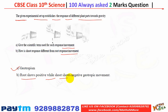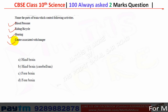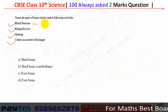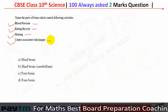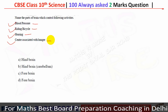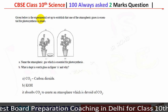Name the parts of the brain which control the following activities: blood pressure, riding a bicycle, hearing, and the center associated with hunger. Blood pressure is controlled by the hindbrain. Riding a bicycle is also controlled by the hindbrain. Hearing and the center associated with hunger are controlled by the forebrain.